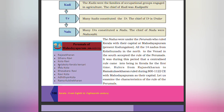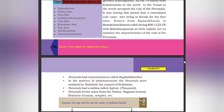Nadu was constituted by many urs, and the chiefs of nadu were Naduvazhi. The Perimars ruled Kerala with their capital at Mahodayapuram. All fourteen nadus, from Kolatthu Nadu in the north to Venad in the south, accepted the rule of the Perimars. It was during this period that centralized rule came to Kerala for the first time. Rulers from Rajashekharan to Ramakula Shekharan ruled during 800 to 1222 CE with Mahodayapuram as the capital.